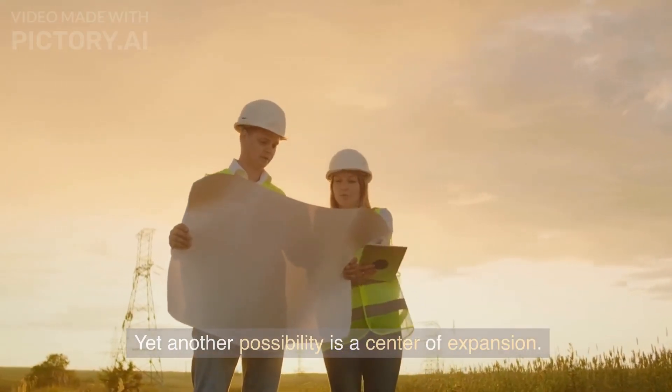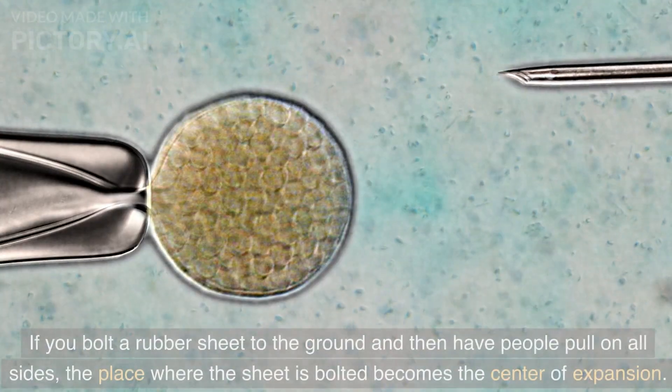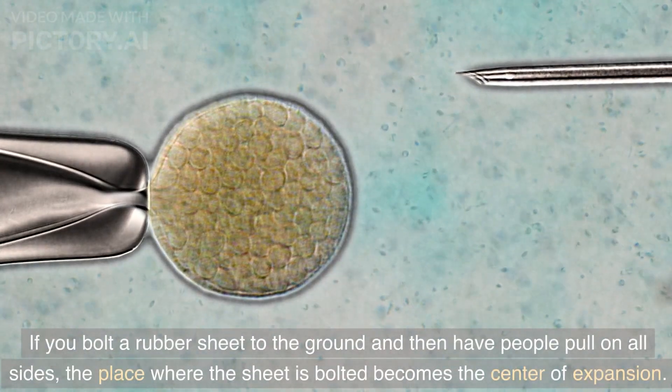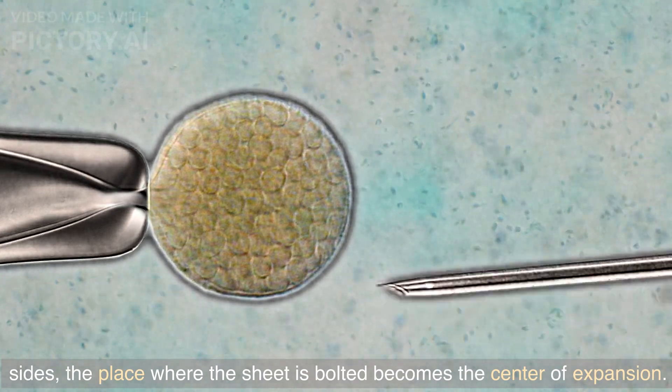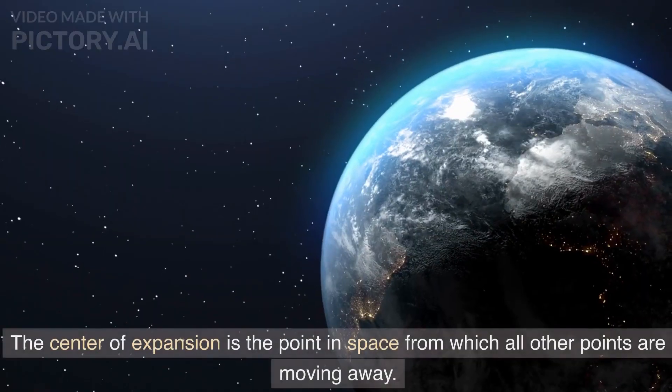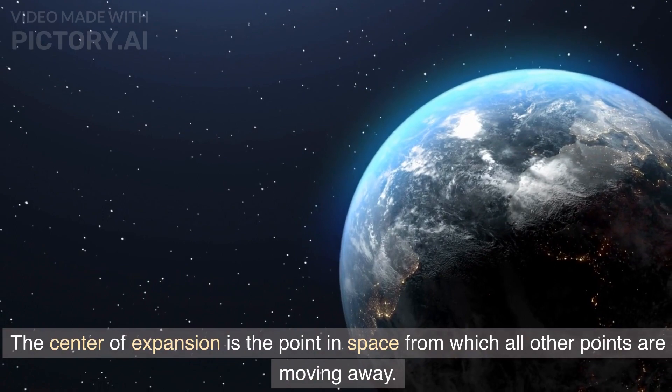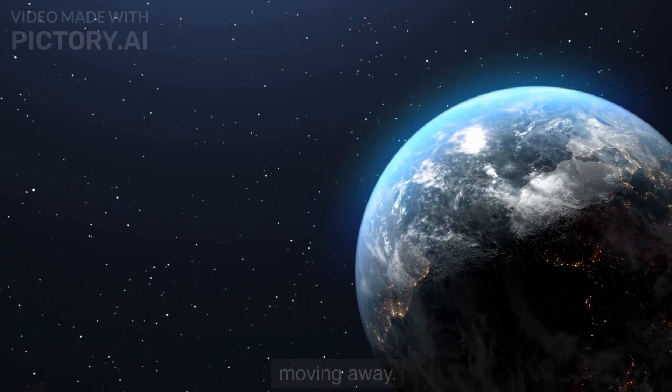Yet another possibility is a center of expansion. If you bolt a rubber sheet to the ground and then have people pull on all sides, the place where the sheet is bolted becomes the center of expansion. The center of expansion is the point in space from which all other points are moving away.